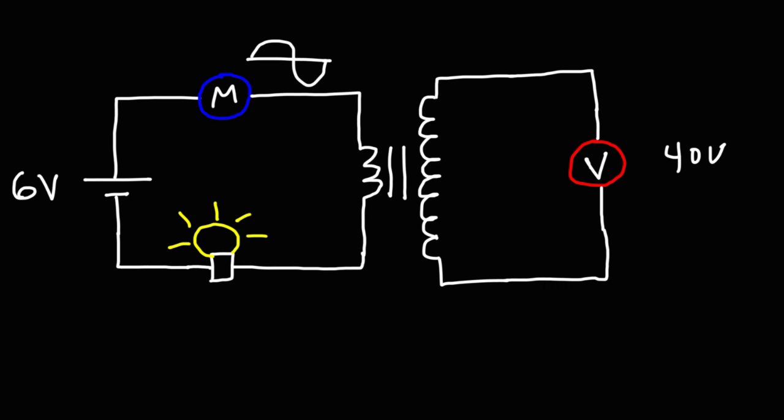The transformer is rated at 6 volts to 120 volts. This is the primary voltage and that's the secondary voltage the way it's used in this circuit. So 120 divided by 6 we get a ratio of 1 to 20. That means that one side of the transformer has 20 times more coil than the other side of transformer.